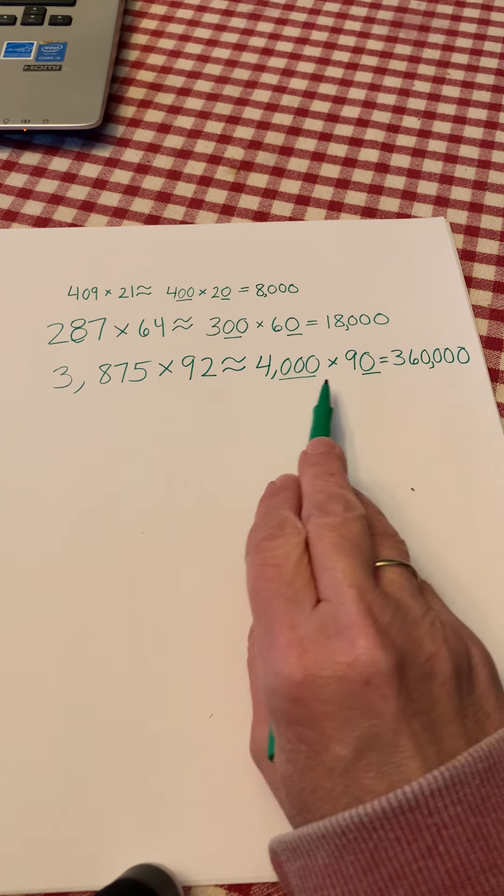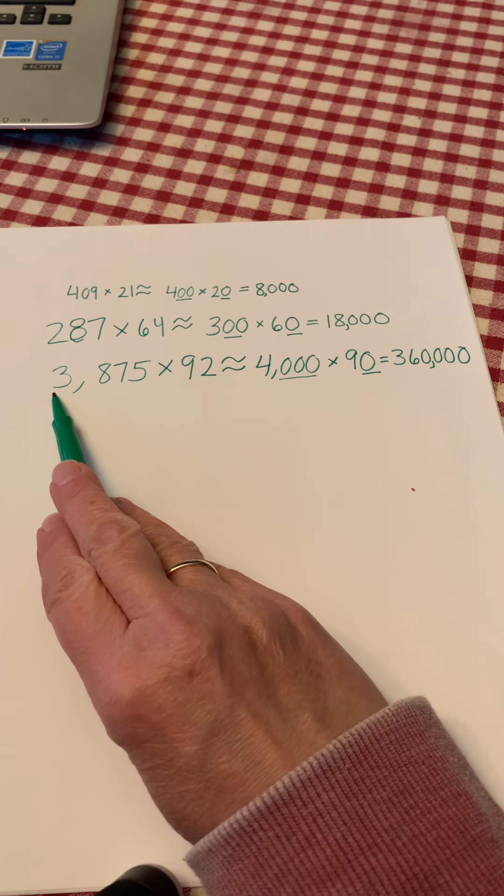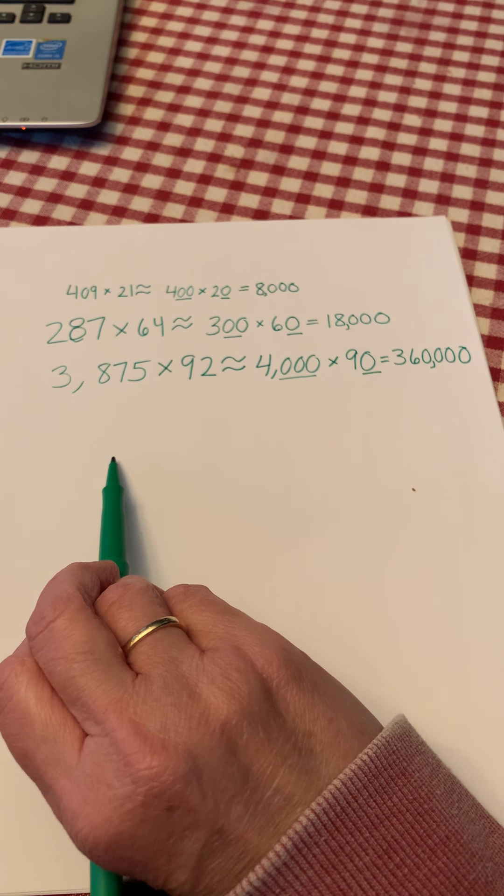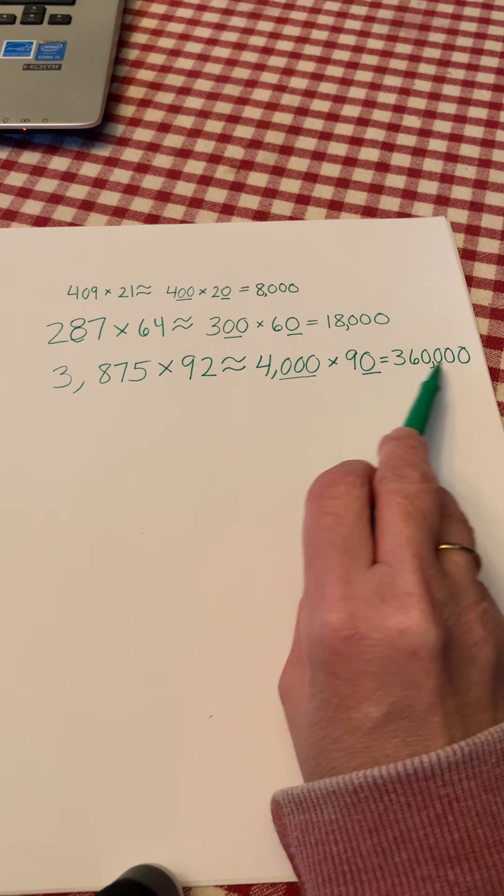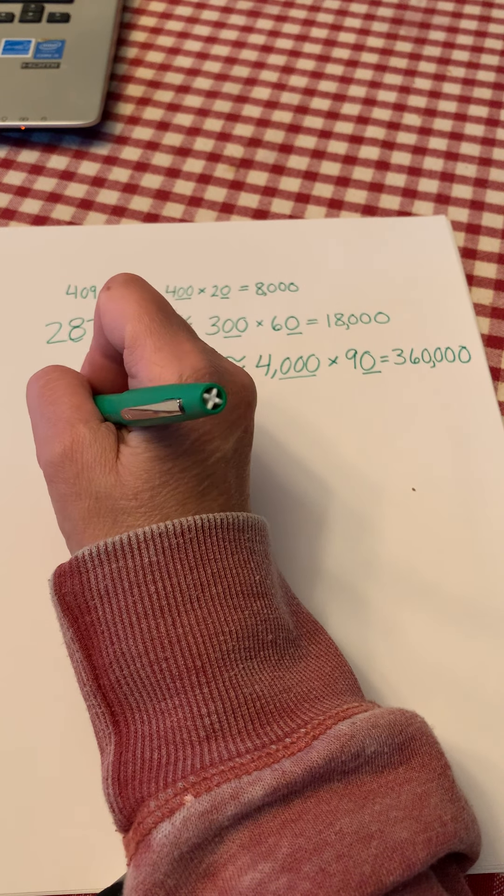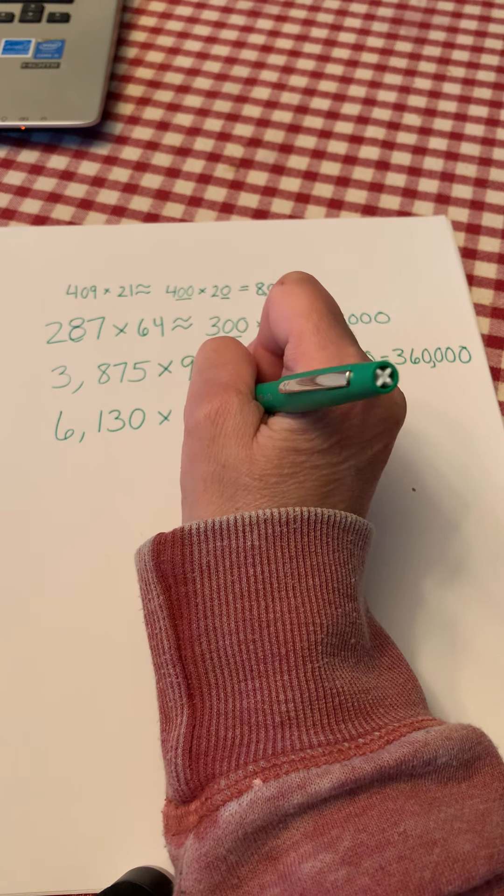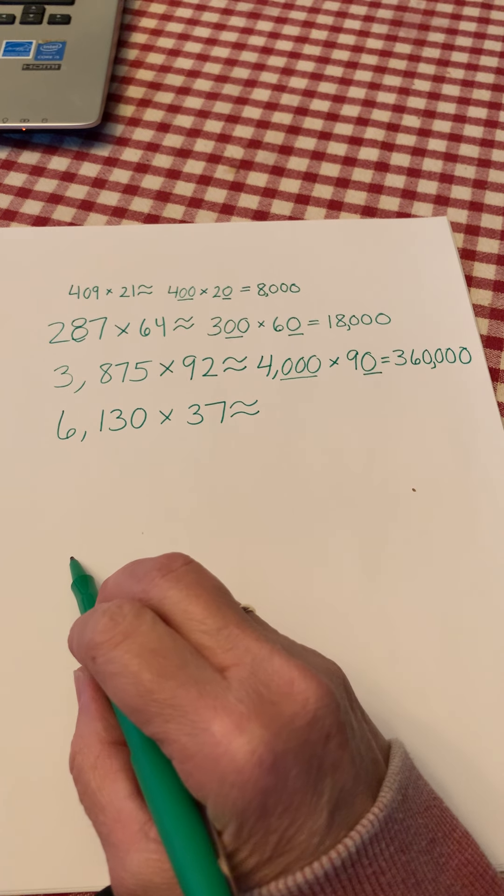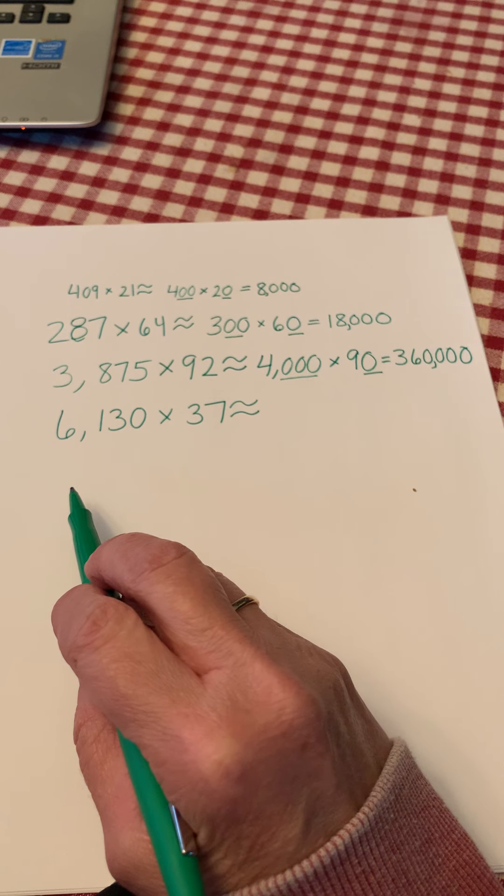If you didn't, go back and look what happened. Maybe you rounded these to a different number. Maybe you rounded this to 3,900. That would give you a different answer. And see if it comes close. It should be close to 360,000. All right, let's try one more. 6,130 times 37. We're going to round that and solve. Press play when you're ready to check your answer.